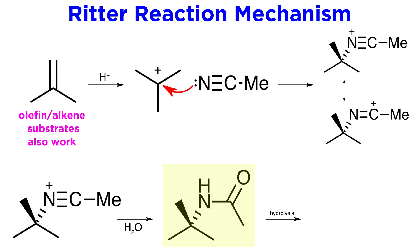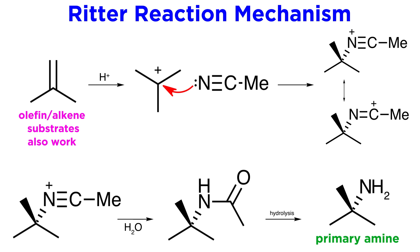As we mentioned, hydrolysis of the amide can yield the primary amine. Of course, the Ritter reaction is not the main technique for making primary amines. We have already discussed other approaches, such as the Gabriel reaction. However, Ritter's original observation can be extended to modified applications that have a lot of value in organic synthesis.